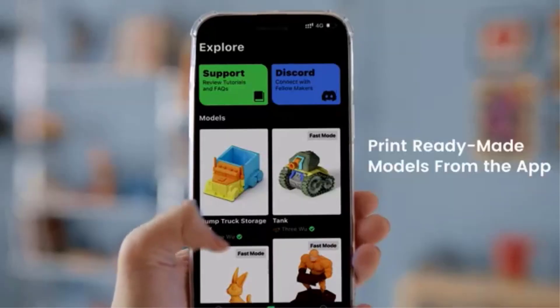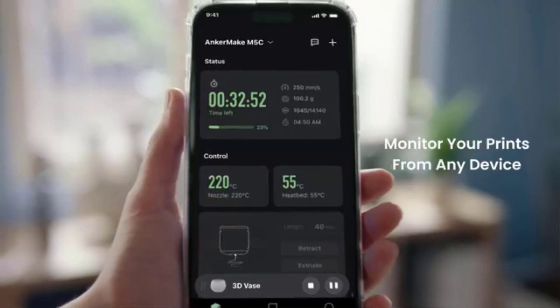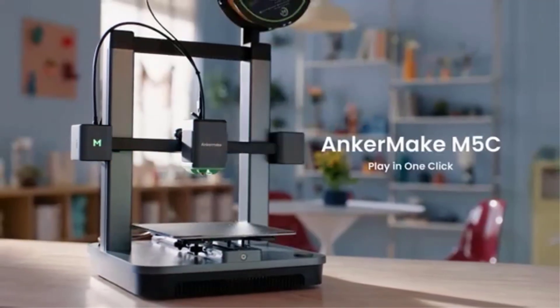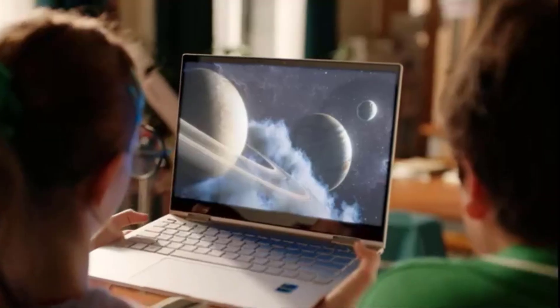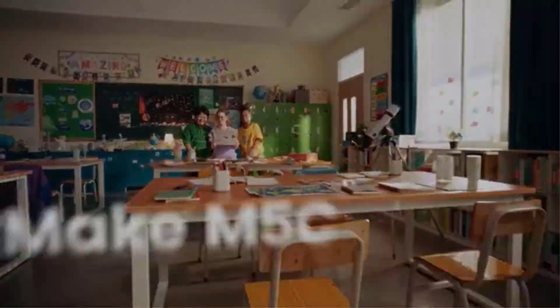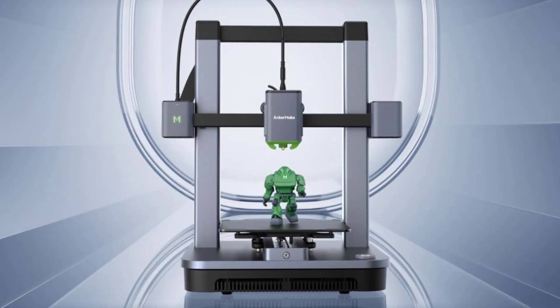One of the standout features of the AnkerMake M5C is its 7x7 auto-leveling system, which ensures precise bed leveling, contributing to better adhesion and more consistent first layers. This advanced leveling system simplifies setup and reduces the chance of print failures, making it user-friendly, especially for beginners.